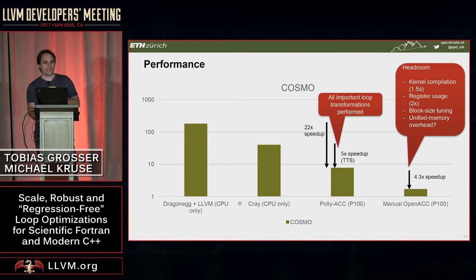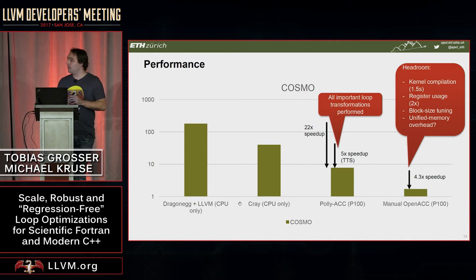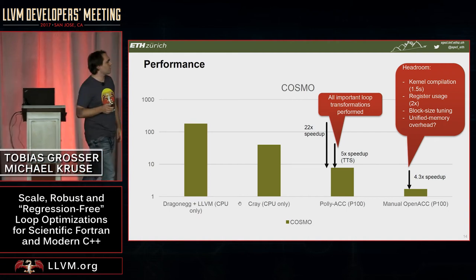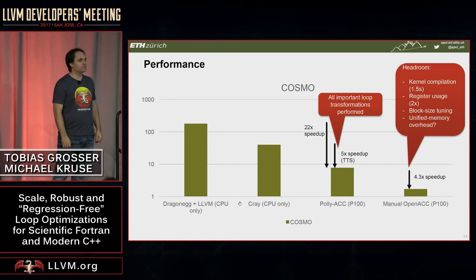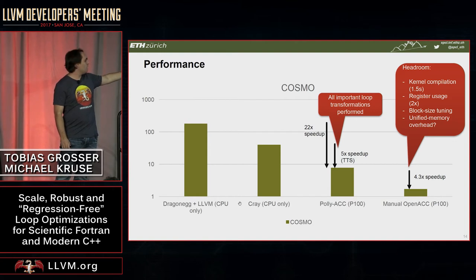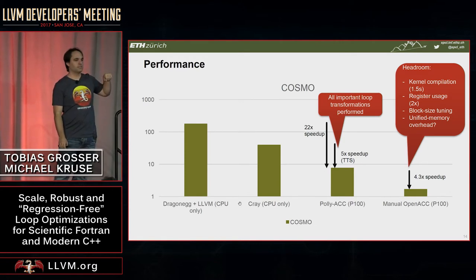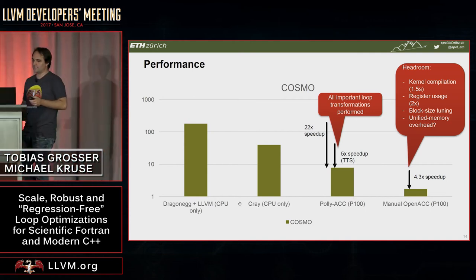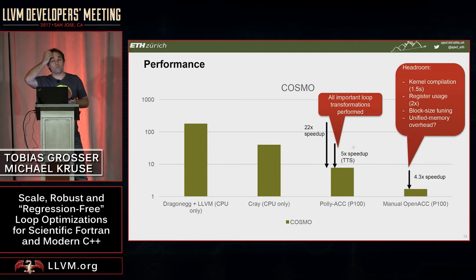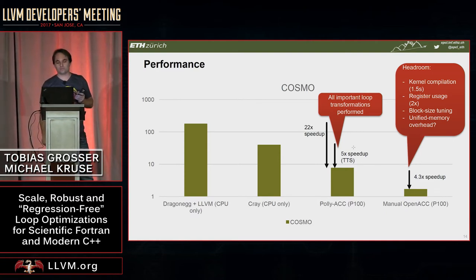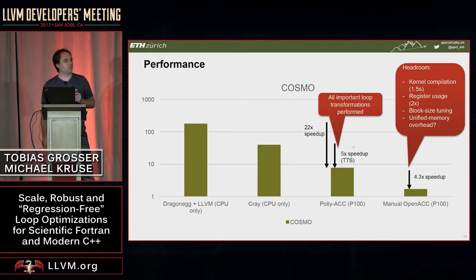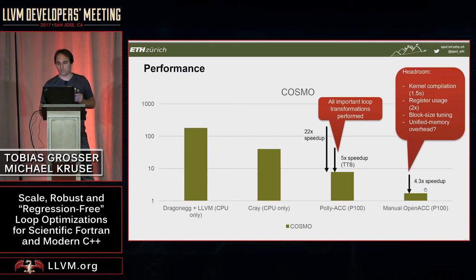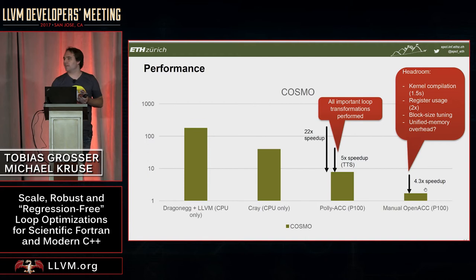Here are some performance numbers — still work in progress. We ran around 180 seconds with DragonEgg and a recent LLVM. LLVM is a lot worse in terms of single-thread CPU performance than the Cray compiler, which runs around 40 seconds. PolyACC with the unified memory gives us a 5x speedup over Cray single-thread performance and a 22x speedup over LLVM-compiled performance. This looks good but is actually bad compared to the manually tuned OpenACC version, where NVIDIA and MeteoSwiss engineers spent a couple of months — we still lack around a 4.3x factor.